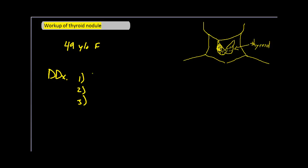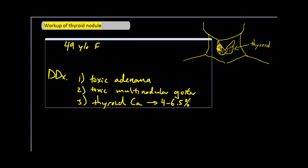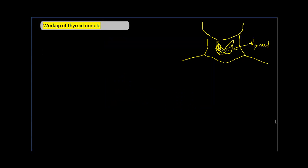Before you walk into the office, you should really start thinking about the differential diagnosis of a thyroid nodule. What would be on your differential? First, toxic adenoma; next, toxic multinodular goiter; and finally, the one we're most concerned about — thyroid cancer. Luckily, thyroid cancer is only present in the general population 4 to 6.5% of the time. Your goal is to differentiate between these three possible options, though there are other possible causes for a thyroid nodule.